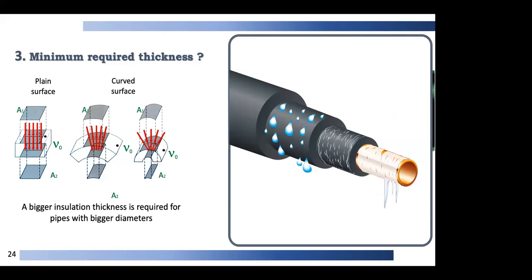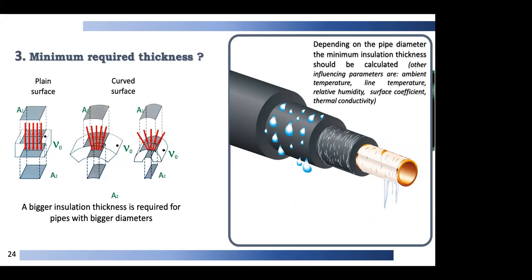A copper pipe without insulation shows freezing. With minimal thickness there is still condensation, but once a proper thickness is applied, there is no condensation on the pipe. Depending on the pipe diameter, the minimum insulation thickness should be calculated. Other influencing parameters include ambient temperature, line temperature, humidity, surface coefficient and thermal conductivity of the insulation.